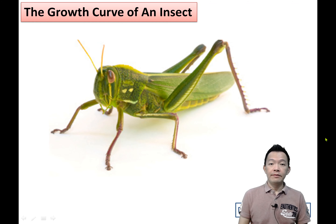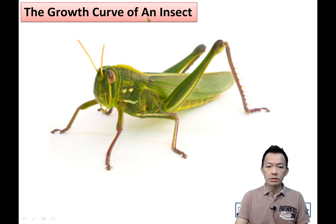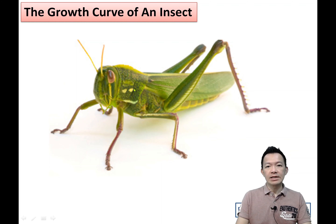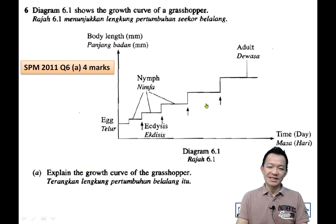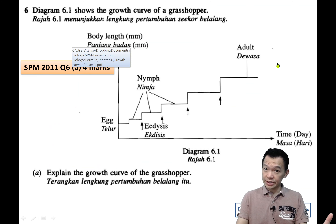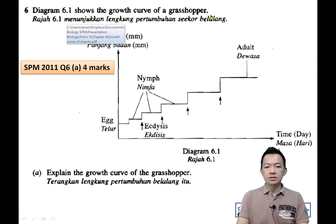Hello, this is video number 37, still about growth, but now we talk about the growth curve of an insect. Today our insect will be the grasshopper, same as other insects. This is another past year essay. Using the past year essay, let me show you the question first. The diagram 6.1 shows the growth curve of the grasshopper — the grasshopper's growth curve.